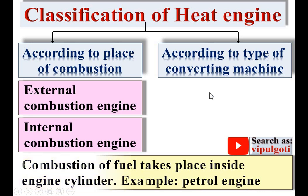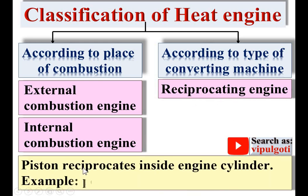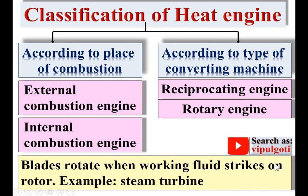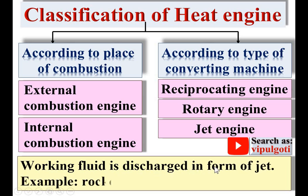The second classification is according to the type of converting machine. In a reciprocating engine, the piston reciprocates inside the engine cylinder — example: petrol engine. In a rotary engine, blades rotate when the working fluid strikes the rotor — example: steam turbine. In a jet engine, the working fluid is discharged in the form of a jet at very high velocity — example: rocket engine.